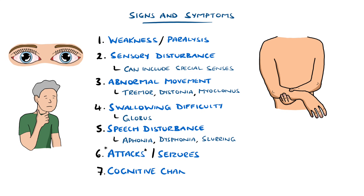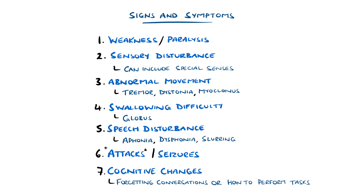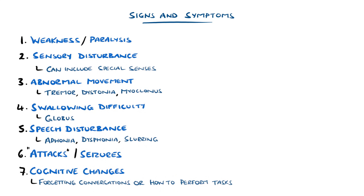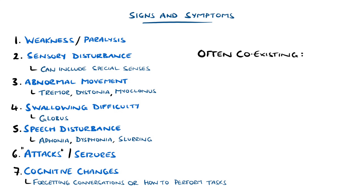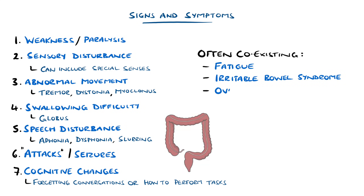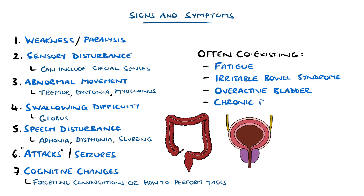Alongside these symptoms, FND can often be accompanied by cognitive changes, including forgetting conversations or how to perform tasks, or using incorrect words. There can also be fatigue and other systemic functional symptoms like irritable bowel syndrome, overactive bladder, and chronic pain.